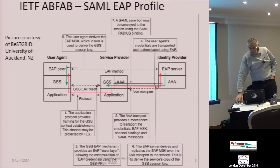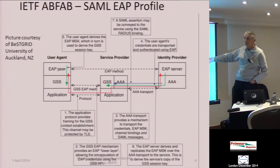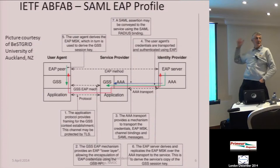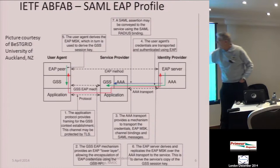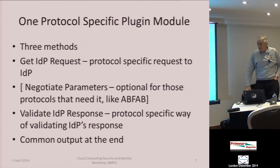When you start to do ABFAB, you find it doesn't work like SAML at all. With SAML you get redirected to the IDP, but with ABFAB you actually talk to the service and the service talks to the IDP behind itself. You're sending your messages to the service, and the service communicates with the IDP, setting up an encrypted tunnel so your username and password go through that tunnel to the IDP.